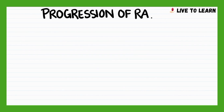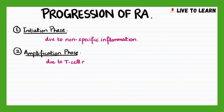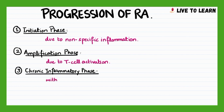The progression of rheumatoid arthritis can be categorized into three phases. The first phase is the initiation phase, which occurs due to nonspecific inflammation. This phase is followed by an amplification phase, resulting from T-cell activation. And finally, the stage of chronic inflammation occurs, which involves tissue injury resulting from the cytokines interleukin-1, tumor necrosis factor alpha, and interleukin-6.